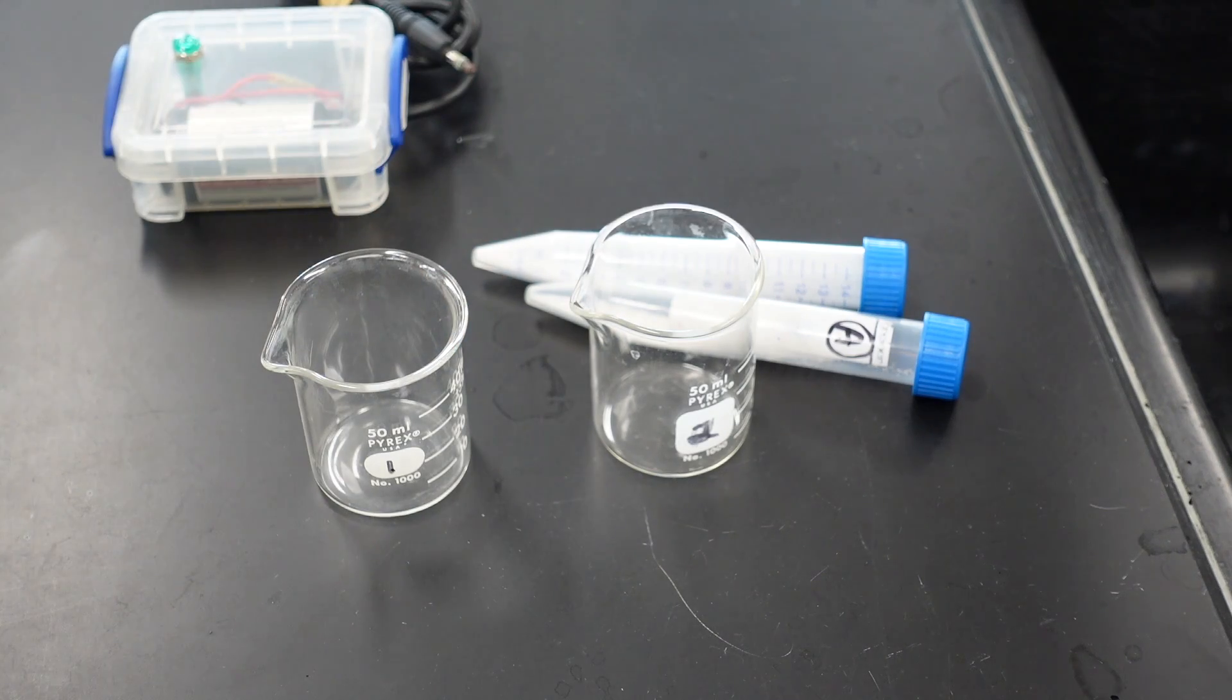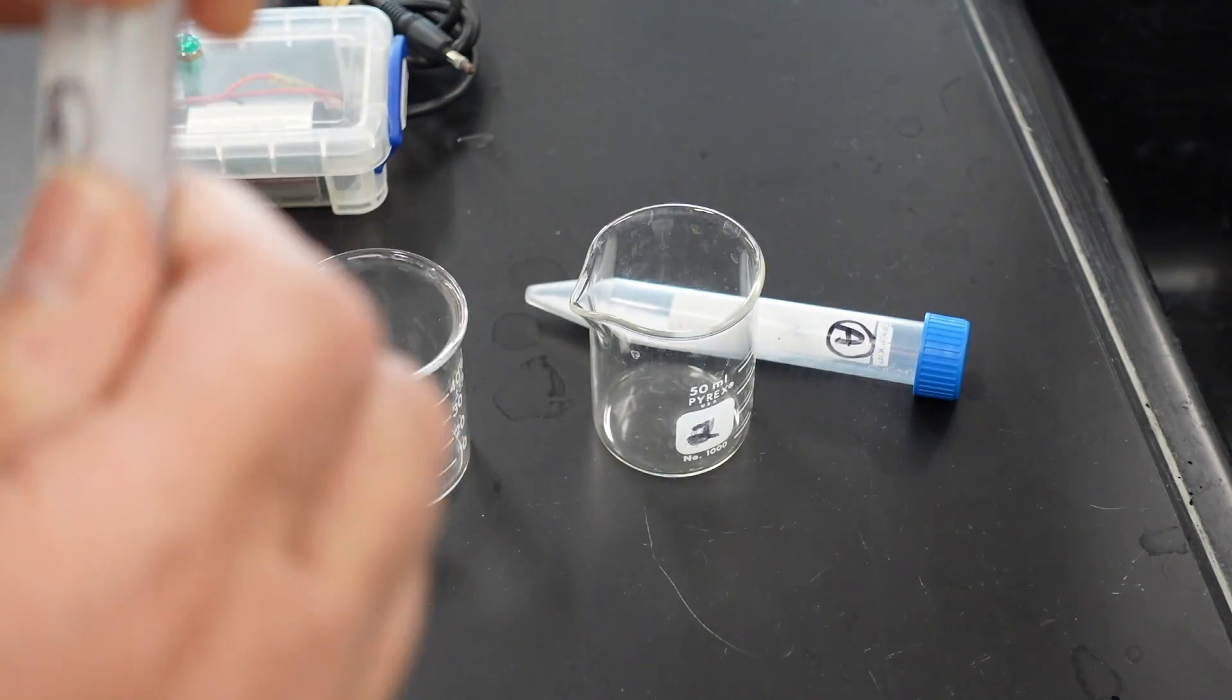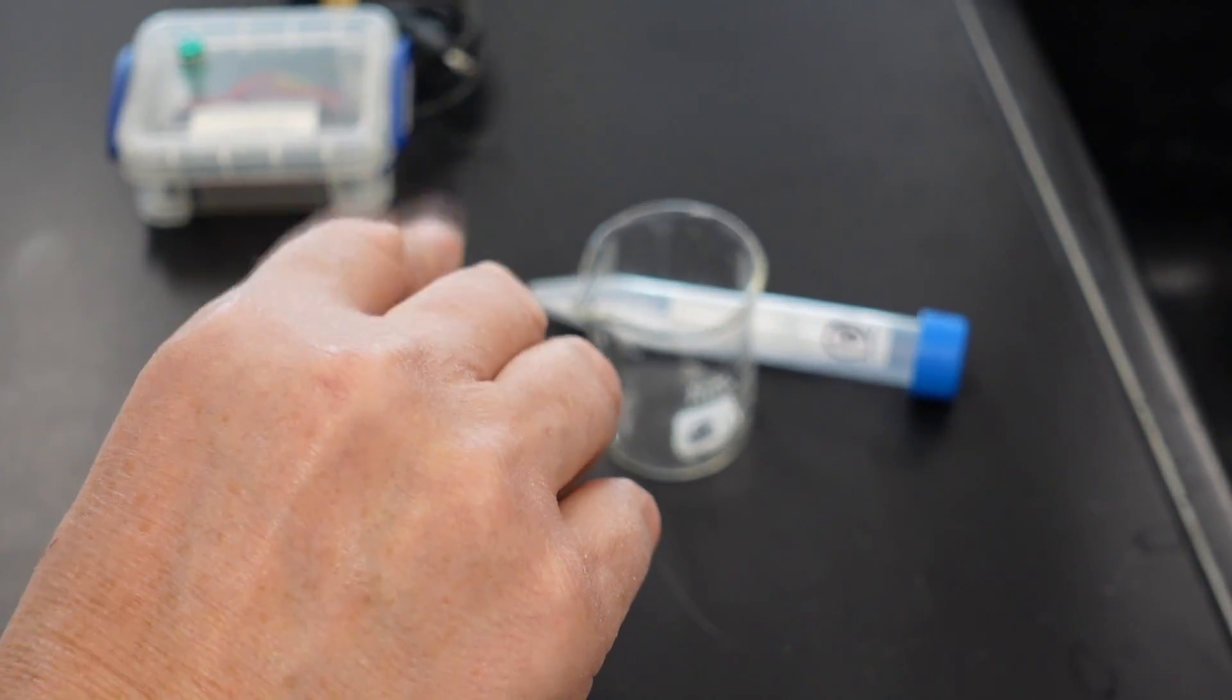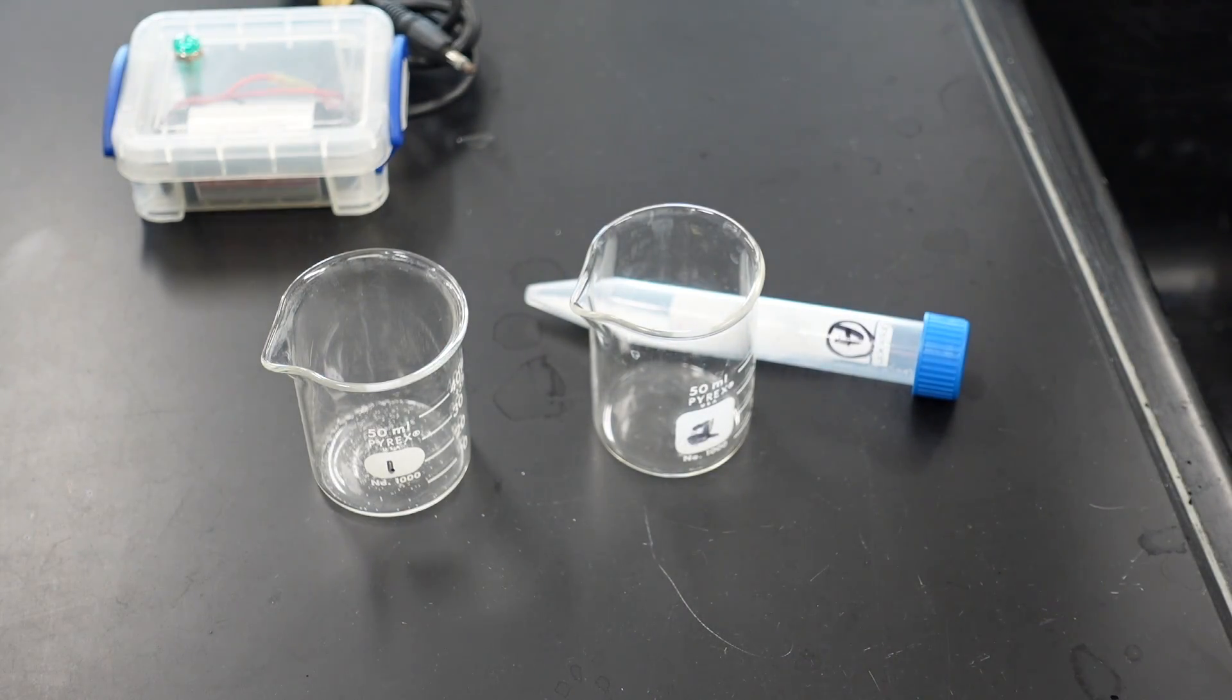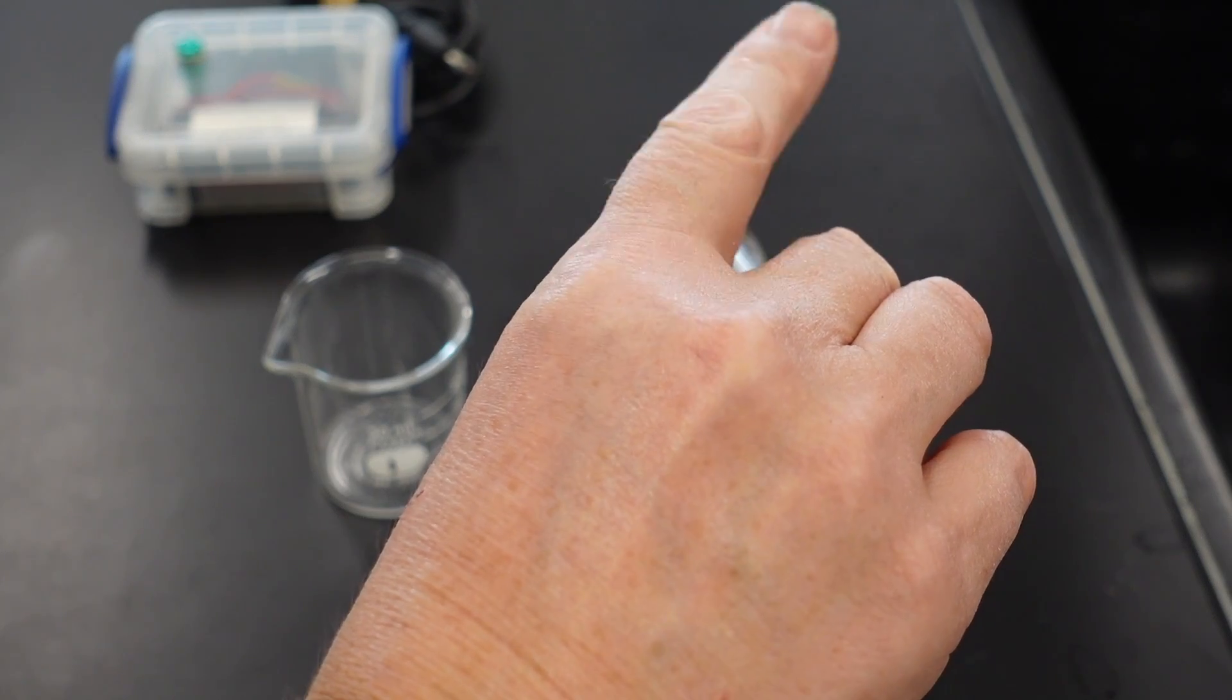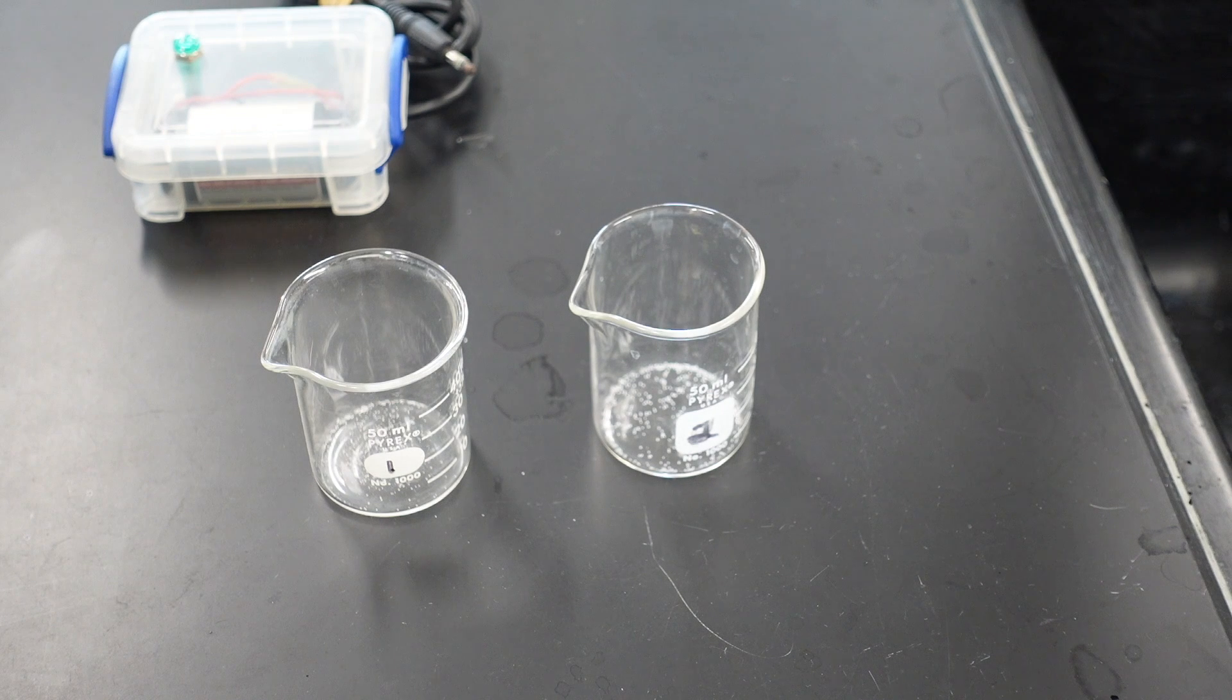So here we have beaker one and beaker two. Into beaker one, I will place a small quantity of substance one. I don't need much. And into the other beaker, I will place a small quantity of substance two. Again, we don't need much.